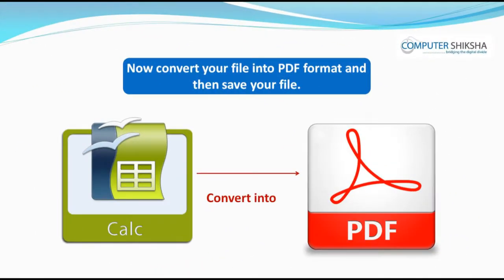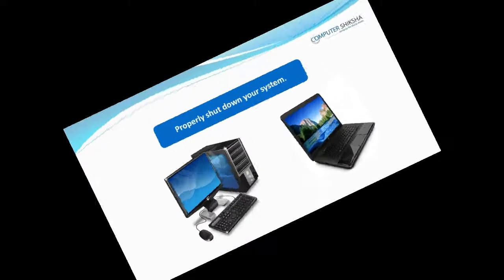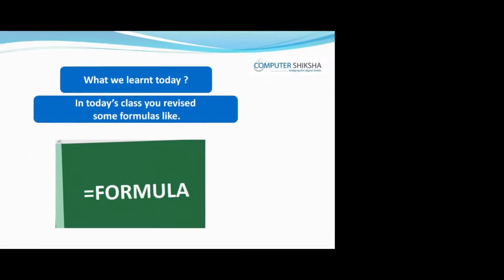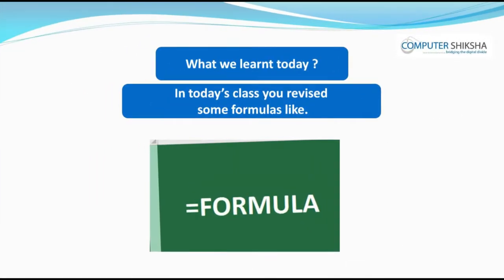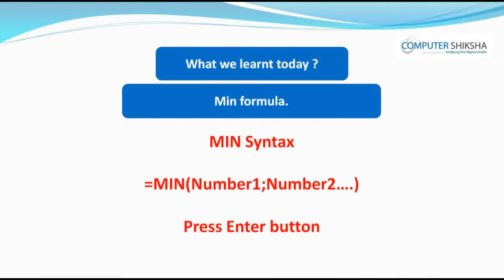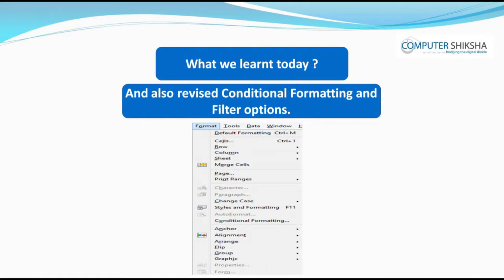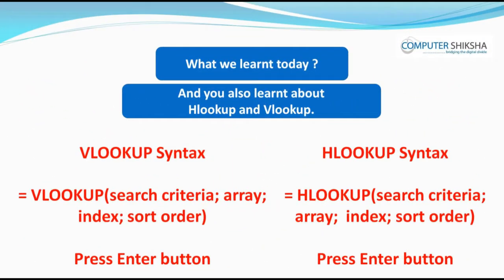Now, convert your file into PDF format and then save your file. Then close your file and properly shut down your computer. In today's class, you revised some formulas like SUM, IF, MAX, MIN, TODAY, and AND, and also revised conditional formatting and filter options. You also learned about HLOOKUP and VLOOKUP.